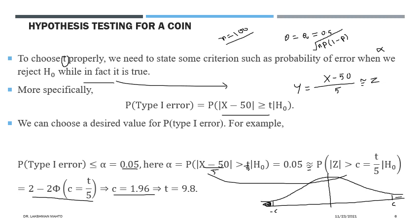From that you can easily compute the value of c, which is 1.96. If you want the value of t, then t equals 5 times 1.96, and simplifying gives t equal to 9.8. You obtained this value with the help of the given significance level and the standardization approach: due to the large sample size, the standardized variable is approximated by a standard normal random variable.